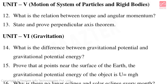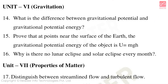Unit 5 Motion of System of Particles and Rigid Bodies — important three-mark questions: What is the relation between torque and angular momentum? State and Prove the Perpendicular Axis Theorem. Unit 6 Gravitation: What is the difference between gravitational potential and gravitational potential energy? Prove that at points near the surface of the Earth, the gravitational potential energy of the object is U = mgh. Why is there no lunar eclipse and solar eclipse every month?